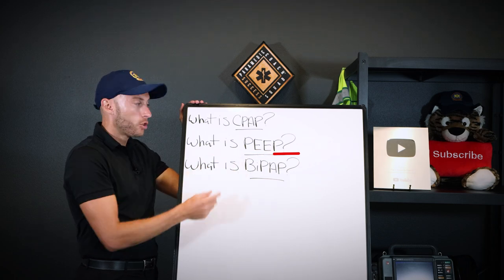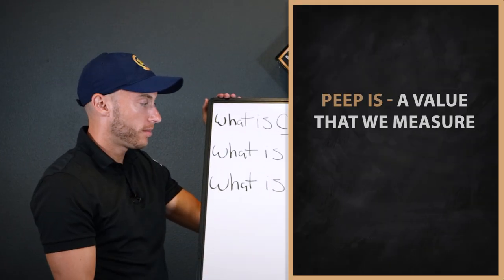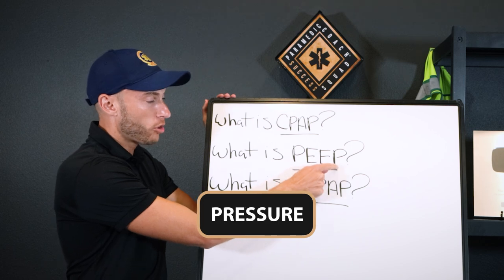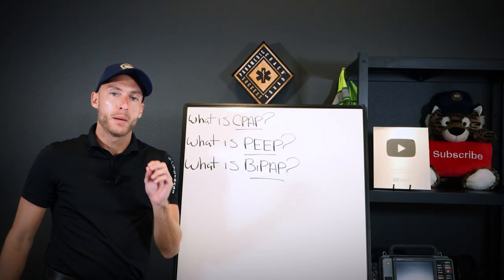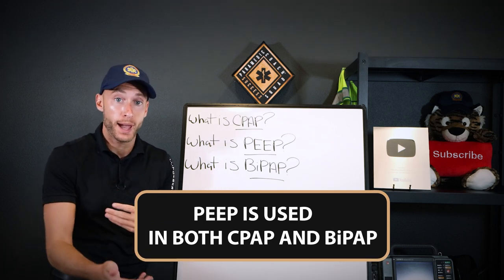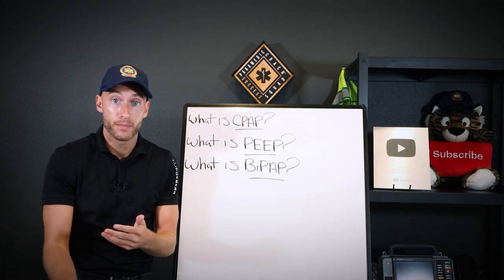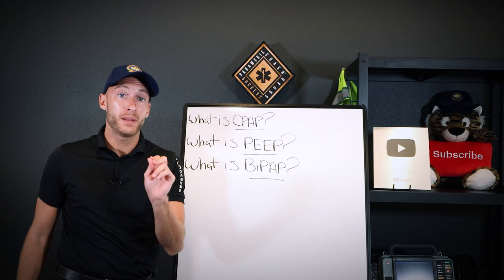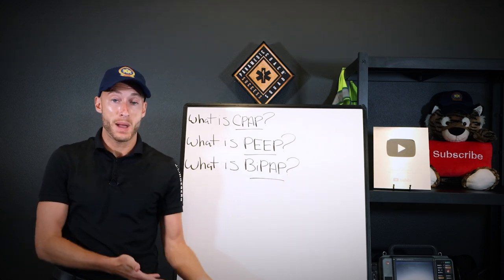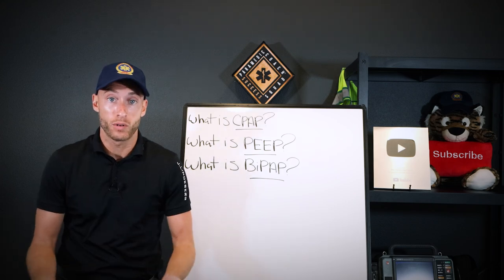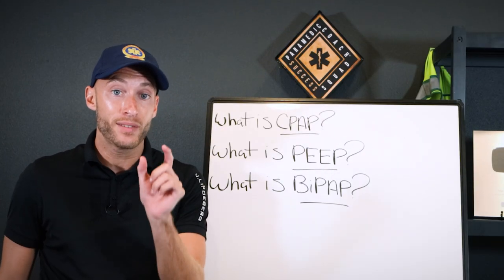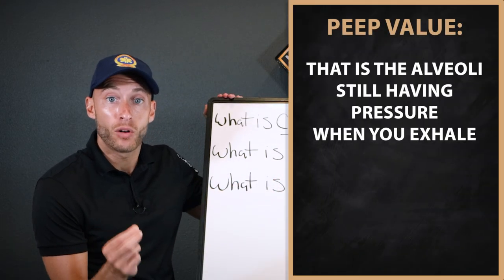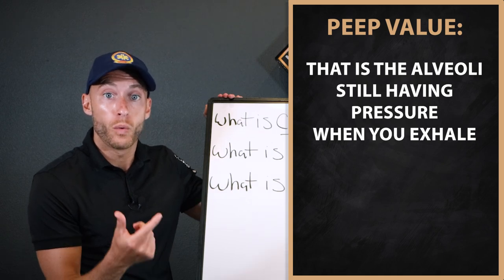That 'keep it open' part has to do with PEEP. PEEP is a value that we measure. PEEP stands for Positive End-Expiratory Pressure. It's used in both CPAP and BiPAP, and it's also a setting you can adjust on the ventilator. When your patient is on CPAP or BiPAP and they exhale, the PEEP setting is the pressure that remains in the alveoli after exhalation.